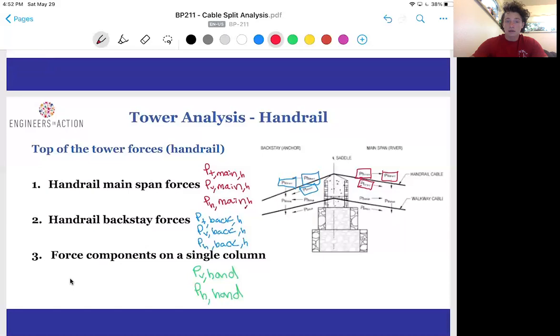Regarding the top of the tower, we will first find the mainspan forces, axial, vertical, and horizontal, by taking the total area of handrail cable over the total cable area to approximate the amount of force that is picked up by the handrail cables. This is multiplied by the main handrail axial tension. For the backstay, we will go through a similar process using the belt friction equation. And finally, for the forces on a single column, we will simply sum the force components and divide by two. Remember, for horizontal forces, the backstay and mainstay are pulling in opposite directions.